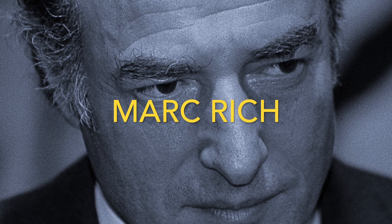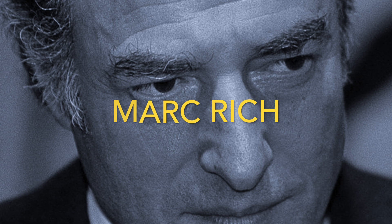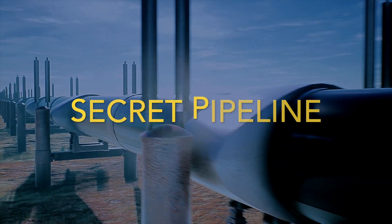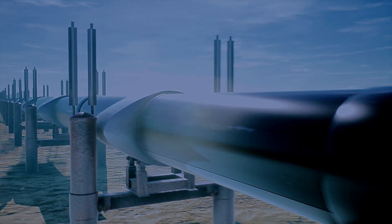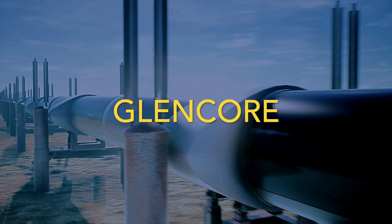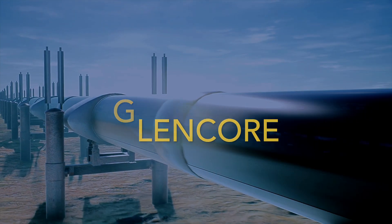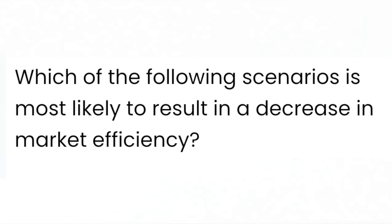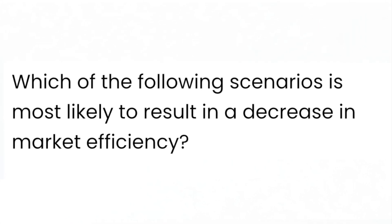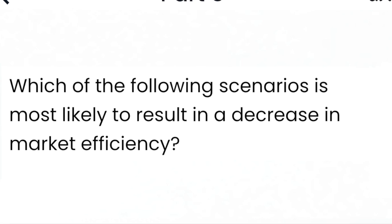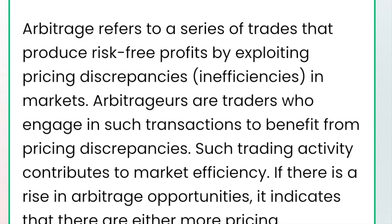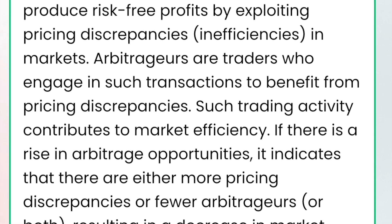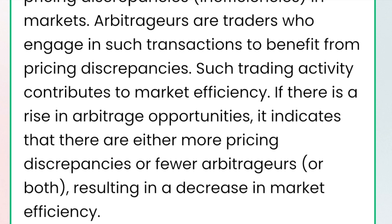This brings us to Mark Rich, one of the most prolific arbitragers in history. One of Rich's most audacious exploits was creating a secret oil pipeline between Iran and Israel during the oil embargo of the 1970s. This audacity and innovation led to the establishment of what would later become Glencore, one of the world's largest commodity trading companies. A CFA test question poses: which scenario is most likely to result in a decrease in market efficiency? The answer: an increase in arbitrage opportunities. This is because arbitragers exploit these opportunities, ironing out pricing discrepancies and contributing to market efficiency.